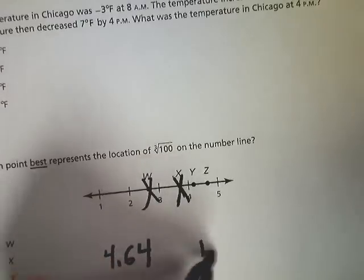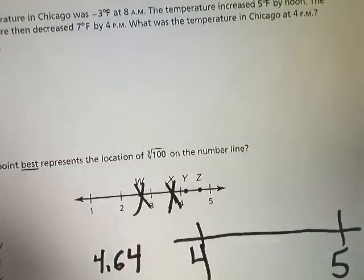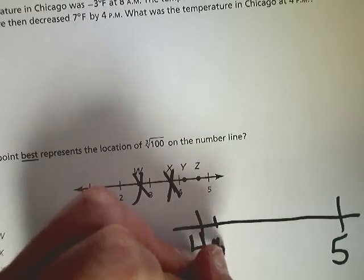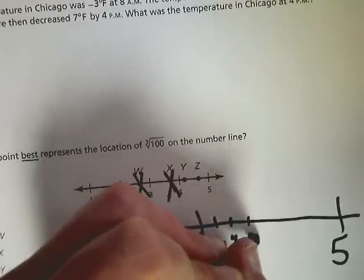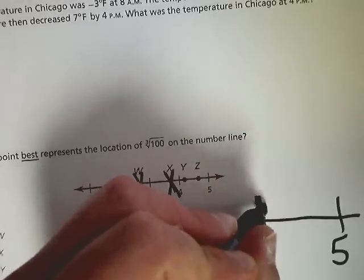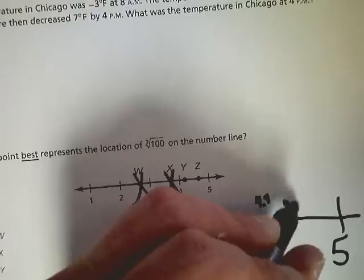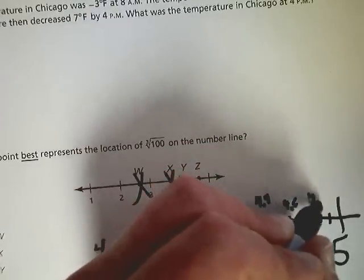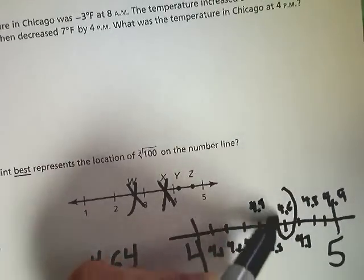What I need to do is break out this 4-5 interval to think about where 4.6 is going to be located. I'm going to do it by writing the tenths down: 4.1, 4.2, 4.3, 4.4, 4.5, 4.6, 4.7, 4.8, and 4.9. Now, 4.6 is right here.